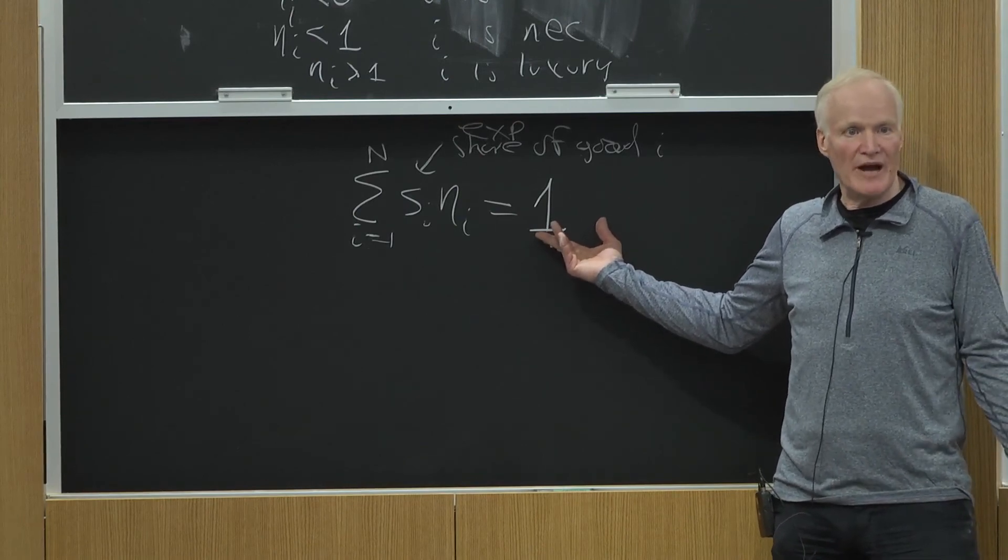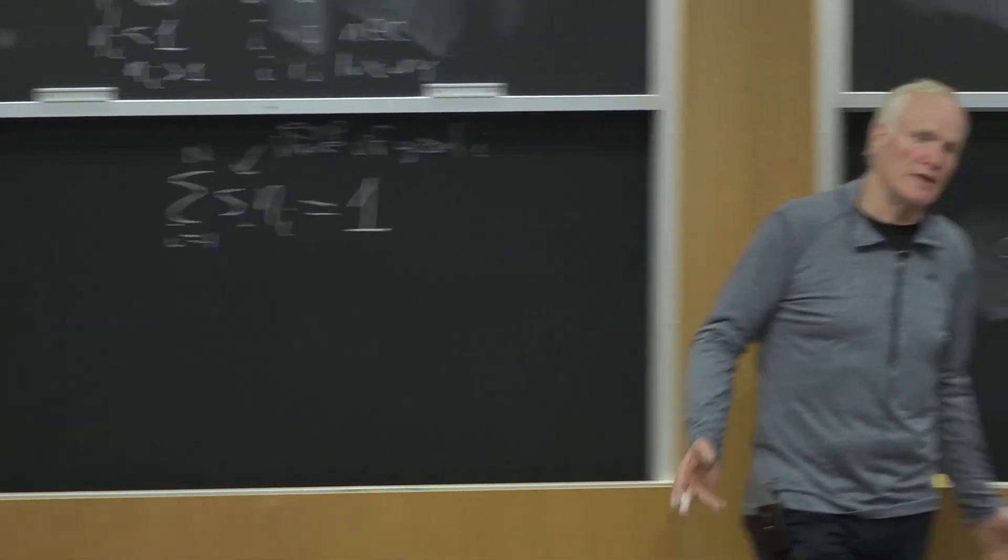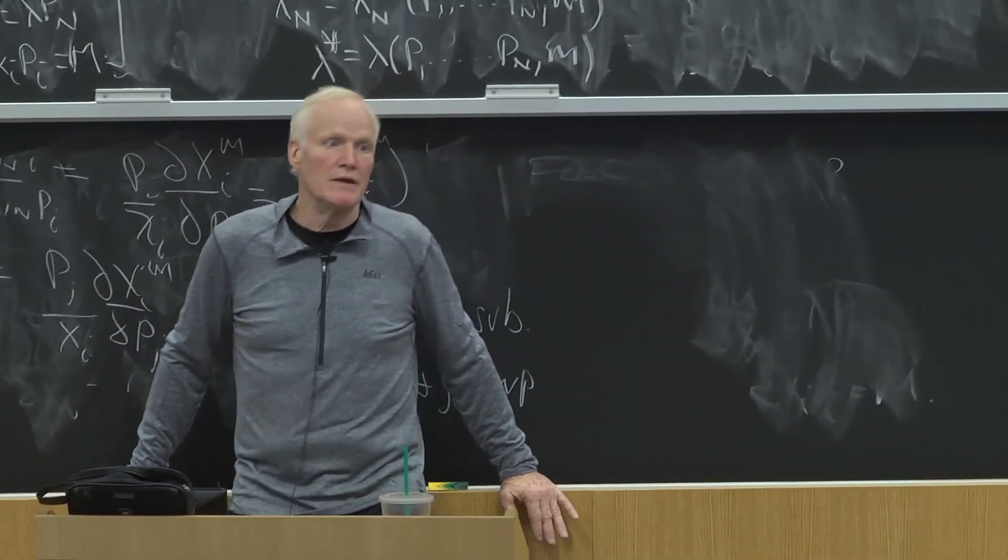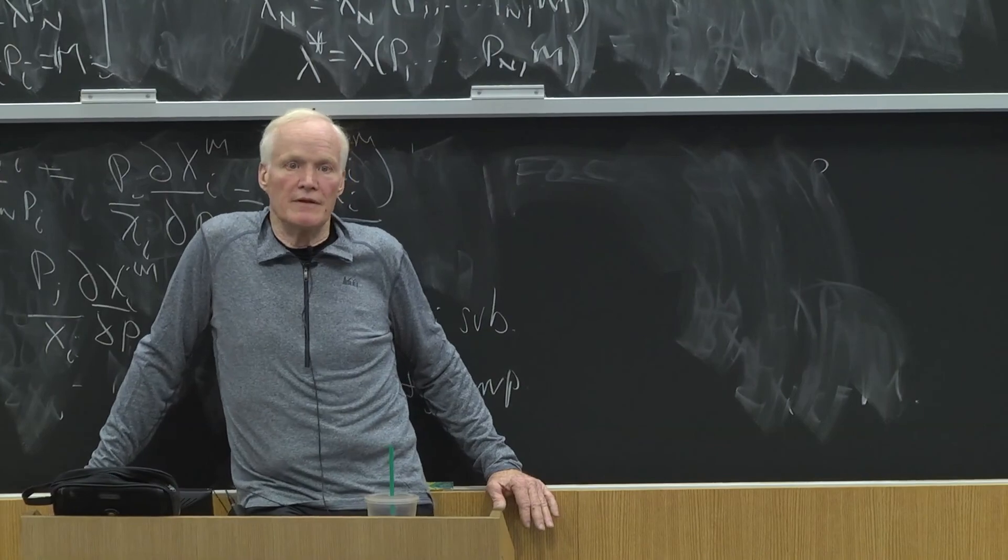From the budget constraint, I can tell you that's the case. And this says a weighted average of the income elasticities has to be 1, which is kind of what we just said. On average, they got to work out to be 1. Some can be bigger than 1, some can be less than 1. On average, they're 1.